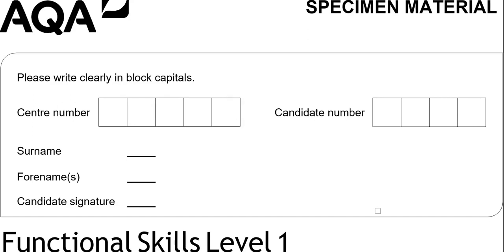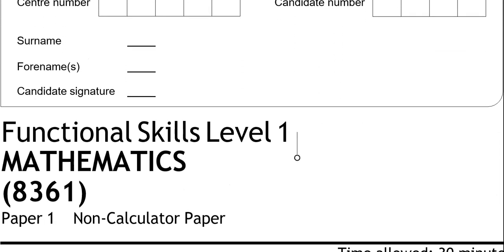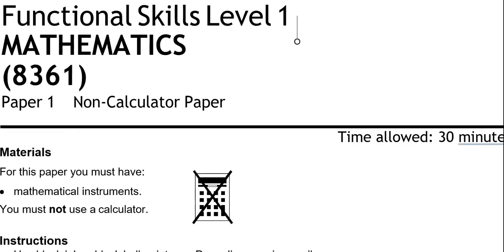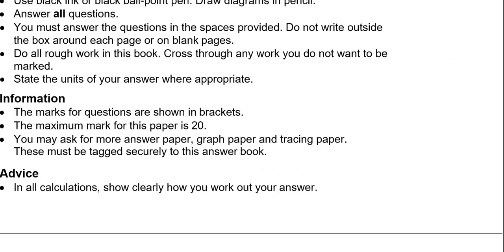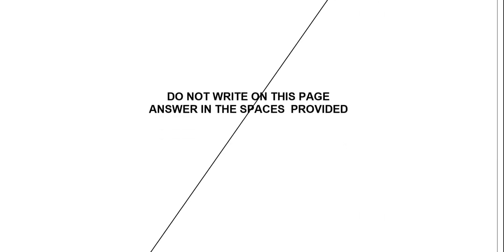This is the Level 1 Functional Skills Maths paper from AQA. It comprises of two parts. In the first part you can't do data, but in the second part you can. So we'll have a look at the first part and we'll take each question in turn.